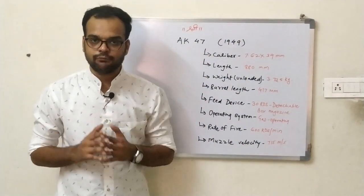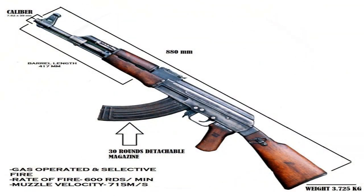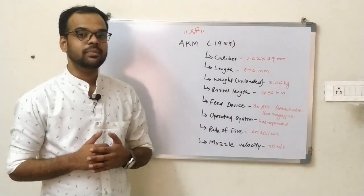Now let's talk about the first firearm of the AK family, the AK-47, which was designed in 1947 and came into operation in 1949. The overall specifications are as follows: caliber is 7.62×39mm, overall length is 880mm, unloaded weight is 3.75kg, barrel length is 417mm, feeding device is a 30-round detachable box magazine, operating system is gas-operated, rate of fire is 600 rounds per minute, and muzzle velocity is 715 meters per second.